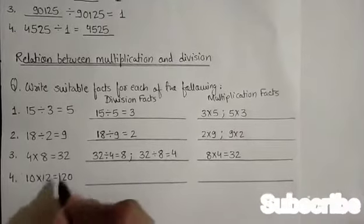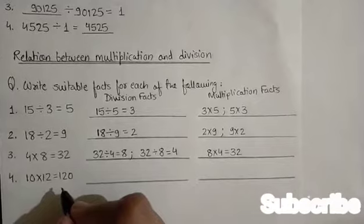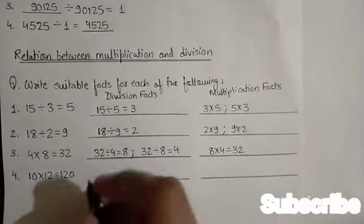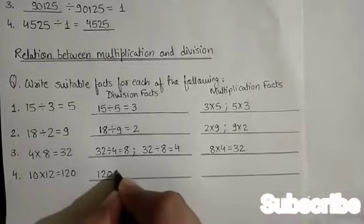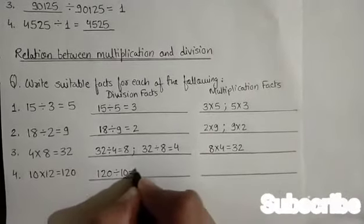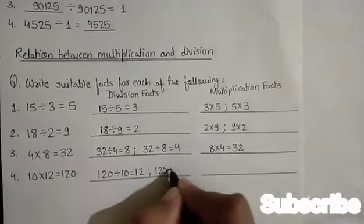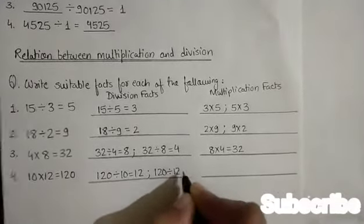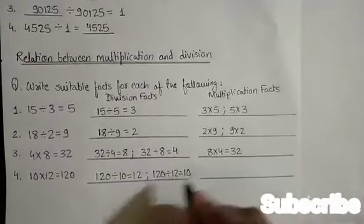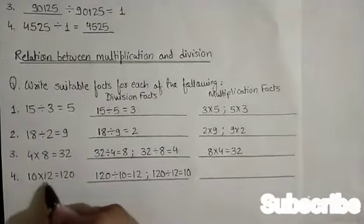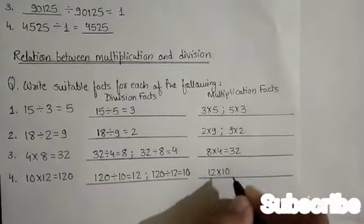So the division facts are: 120 divided by 10 equals 12, and 120 divided by 12 equals 10. Now the multiplication fact for this will be 12 into 10 equals 120.